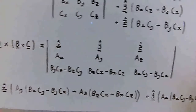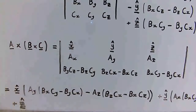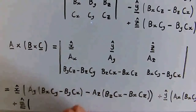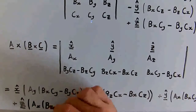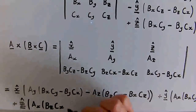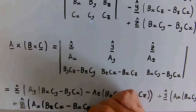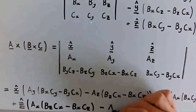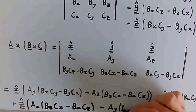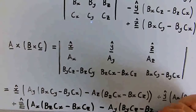And finally the z-hat component, which involves Ax times the appropriate terms from the (B cross C) expression — specifically the combinations of Bz·Cx, Bx·Cz, By·Cy, and By·Cz terms.